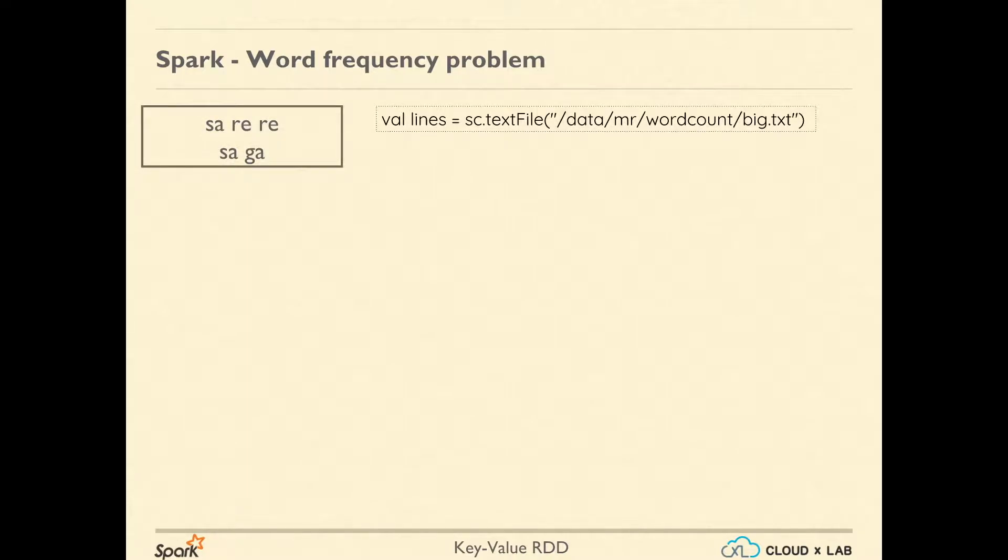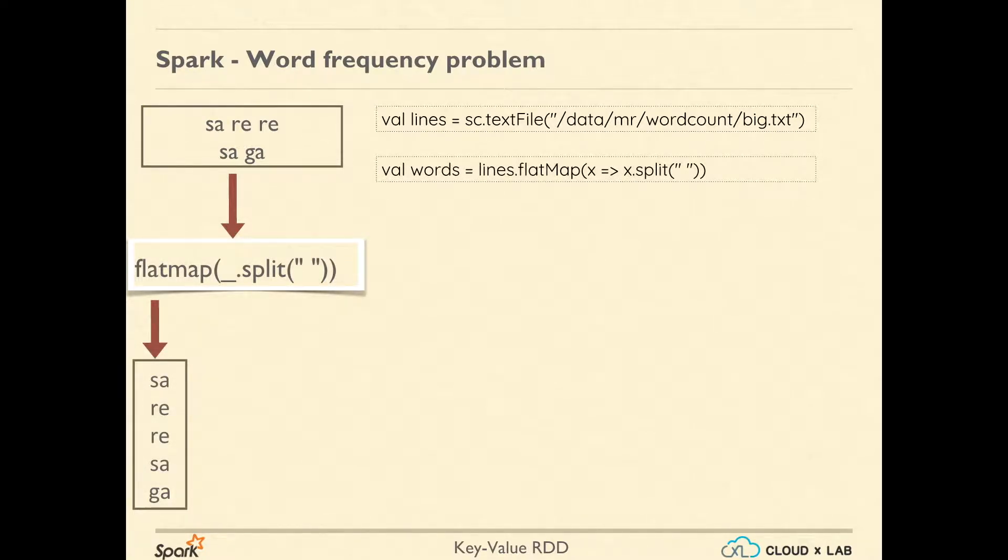Let's see. First, we created an RDD named lines from a file located in HDFS at data/mr/wordcount/big.txt. Please note that the diagram is not showing the data from this file; it is just dummy data to avoid too much text on the screen. In this RDD, by default, each record is a line. Then using flatMap, we split each line by space into words. Thus, the resulting RDD words is made up of words.